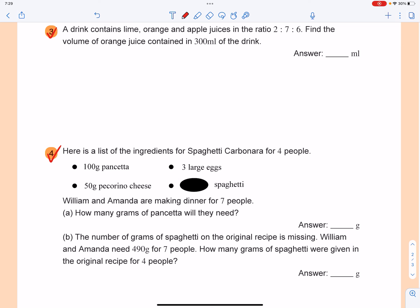Hold more question number three in lesson 14. A drink contains lime, orange and apple juice in the ratio 2 to 7 to 6. Find the volume of orange juice contained in 300ml of the drink.